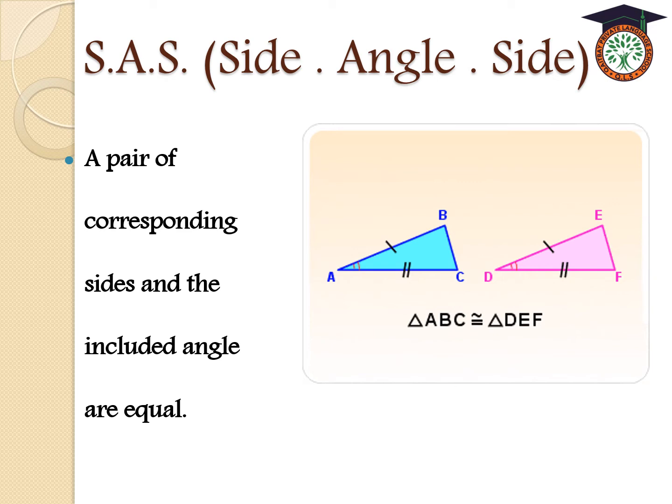The included angle between these two sides — angle A, included between AC and AB — corresponds to angle D, included between DF and DE in the other triangle. If two corresponding sides are equal and the included angle between them is equal, therefore triangles ABC and DEF are congruent.